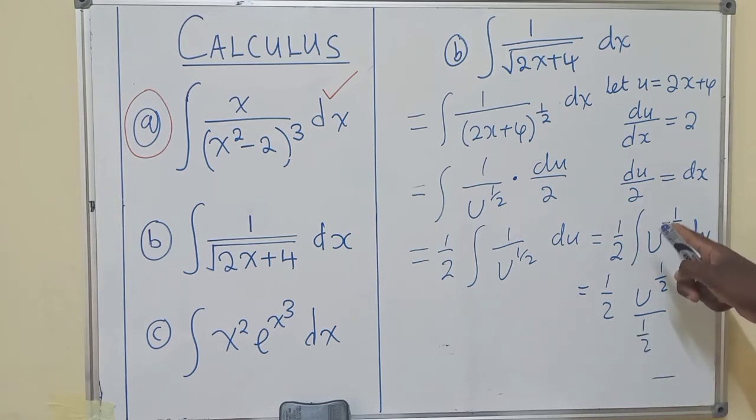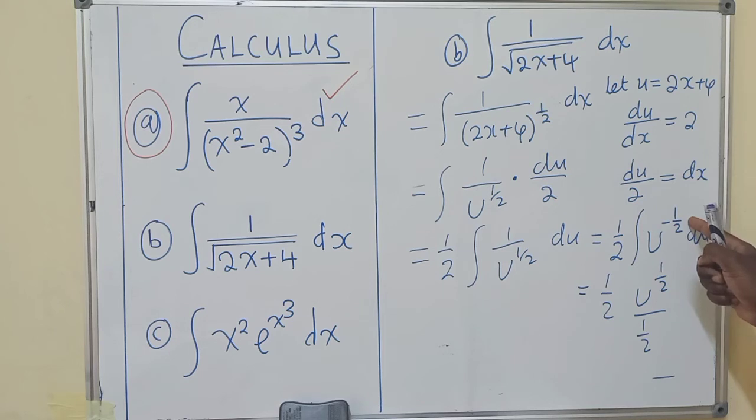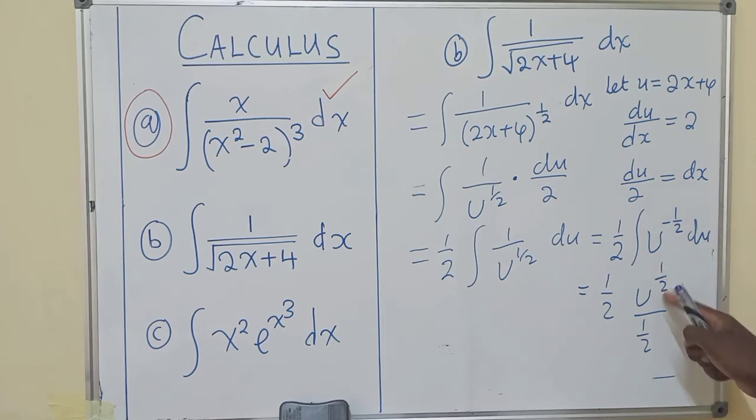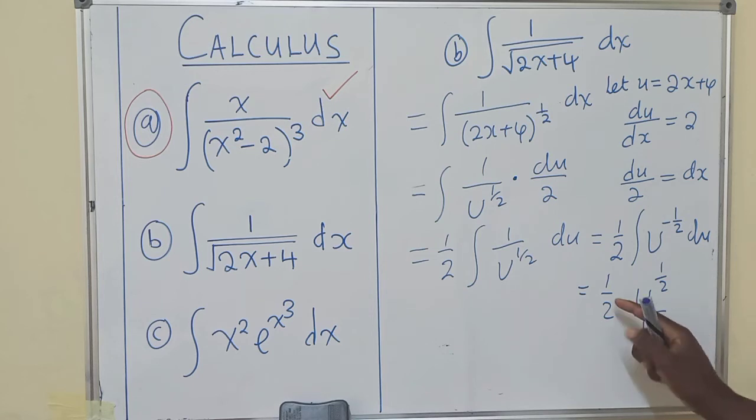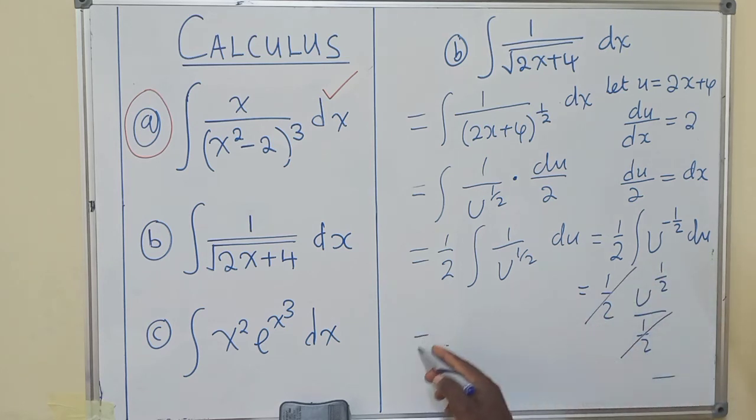If you are able to see this power here, when integrating we add 1. So when we add 1 here, it will give us 1/2. So this 1/2, the new power, you divide. When you divide the new power, this will reciprocate, so this and this will cancel.